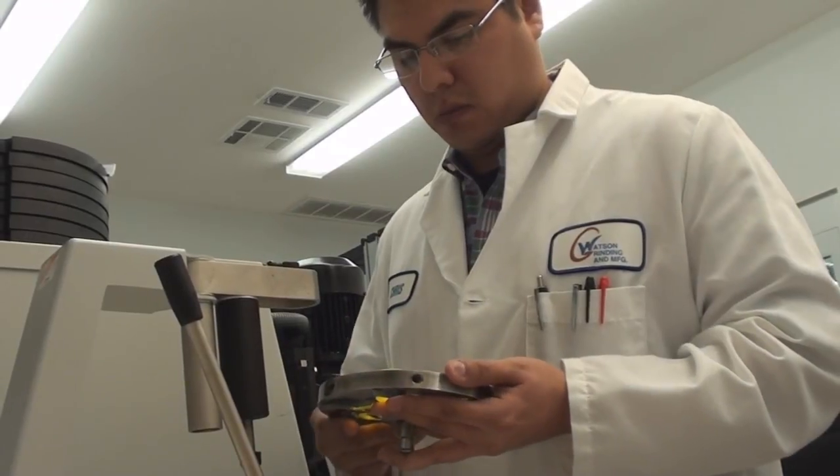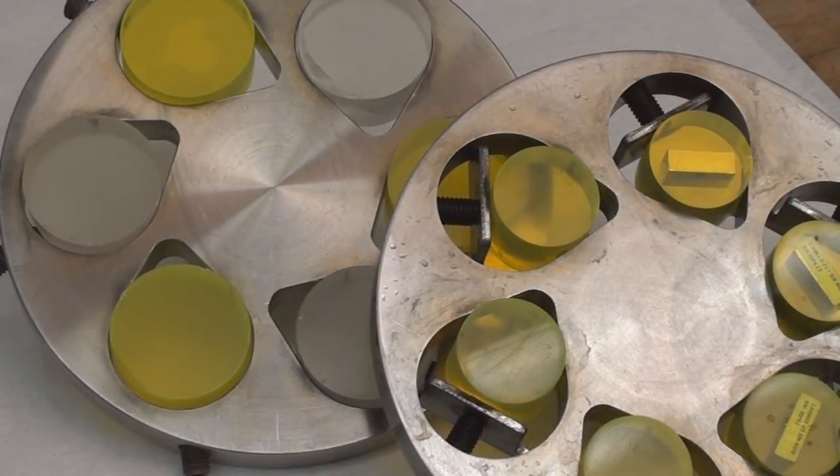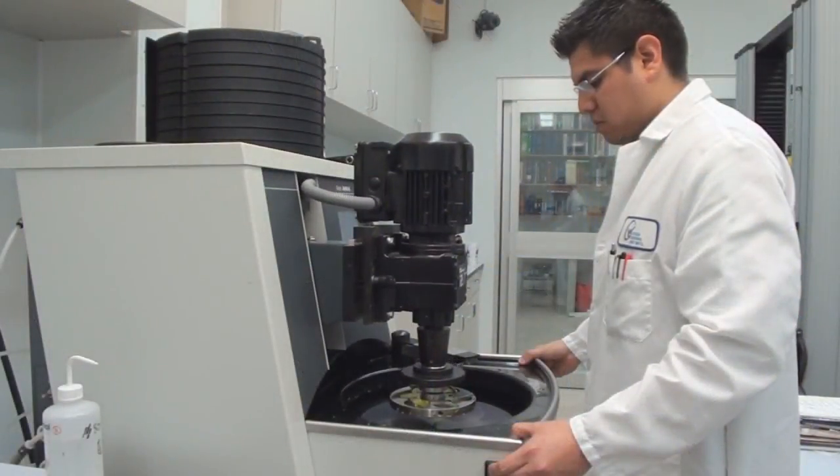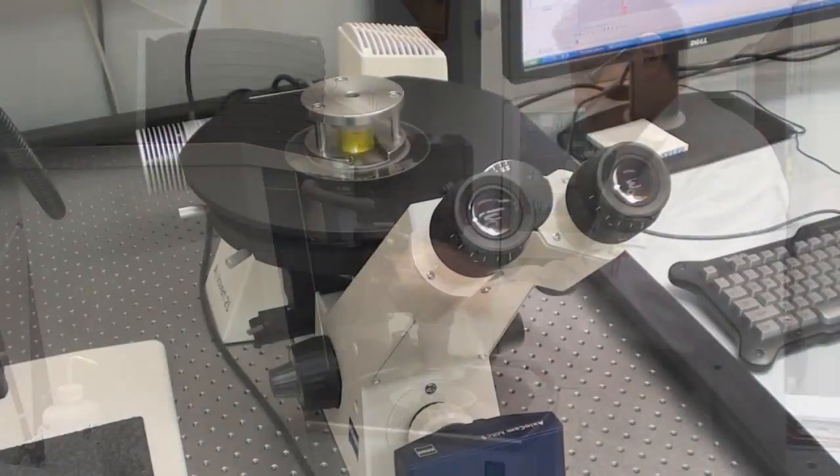In order to prepare the specimen for testing, we polish it to a precise level exposing a subsurface microstructure. We refer to this process as metallographic preparation. The exposed microstructure is then examined using a light optical microscope.